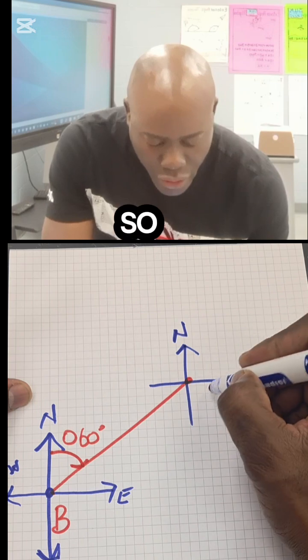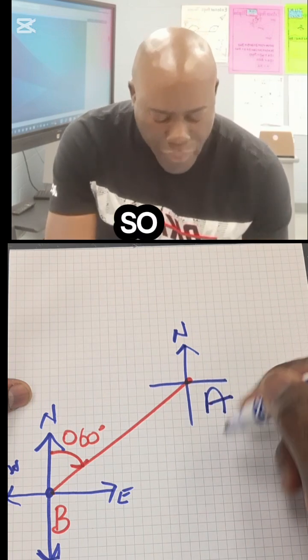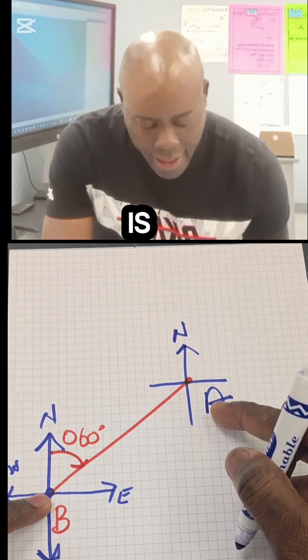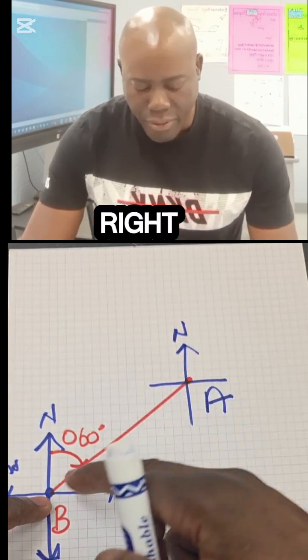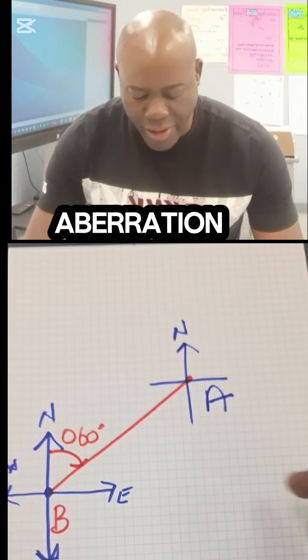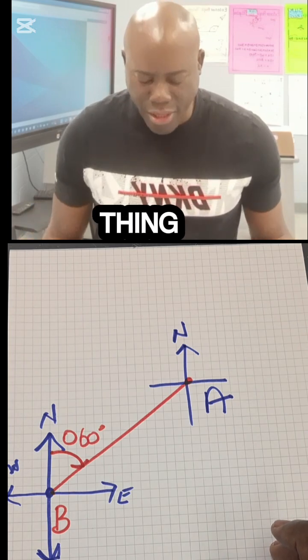I'm gonna draw my north line. North is very important. We're suggesting that A is here and B is on this bearing. A is on a bearing from B, as you could see right here.